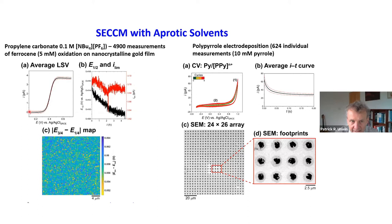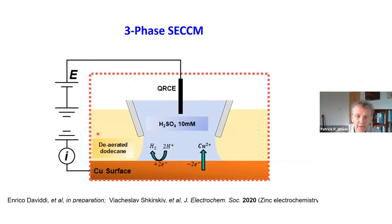There are many thousands of individual current-voltage curve measurements, and the average of all those curves has just one standard deviation of spread — a very, very reproducible response. The quasi-reference counter electrode in these systems is really, really stable.